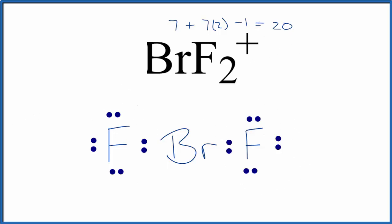So let's put those remaining valence electrons around that central bromine. And when we do that, it completes the octet on the bromine. So now we've used all 20 valence electrons. Each atom has 8 valence electrons. We're done. This is the Lewis structure for BrF2+.